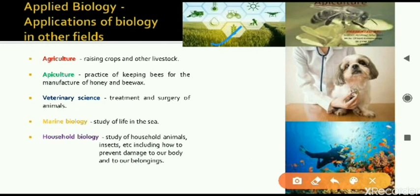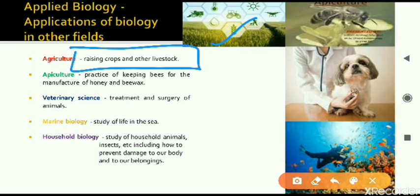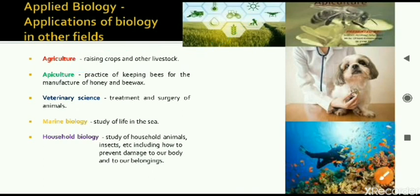The first one is agriculture. In agriculture, in day-to-day life, it is important because it leads to raising of crops and other livestock. Livestock are the animals which are used for the purpose of agriculture — the cattle, for example. So that is agriculture.